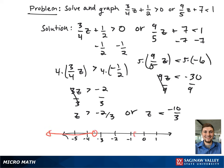So we have an open-ended circle going from negative 10/3 to negative infinity and an open-ended circle going from negative 2/3 to positive infinity.